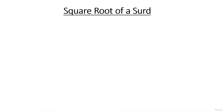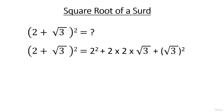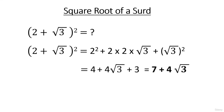We move on to the next part: finding the square root of a surd. To understand this, let's first understand how to square a surd. If you take 2 plus root 3, here 2 is the rational part and root 3 is the irrational part. When you square it using the (a+b)² formula: 2² + 2×2×√3 + (√3)² = 4 + 4√3 + 3 = 7 + 4√3.